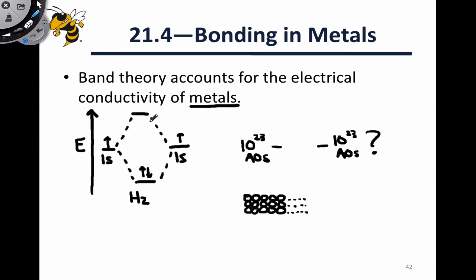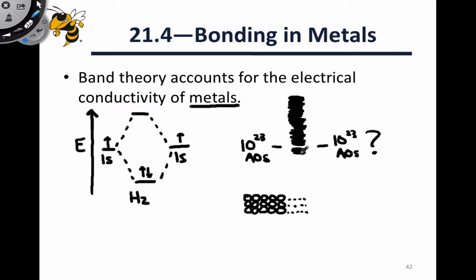What happens here is that the atomic orbitals continually split each other. There's a splitting to two, those two are split to four, those four to eight, those eight to 16, and as that continued splitting happens, the levels get denser and denser. The molecular orbital energies get closer and closer to one another, resulting in a band of extremely tightly spaced orbitals with perhaps a very small gap between the bonding and antibonding levels.